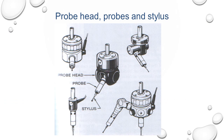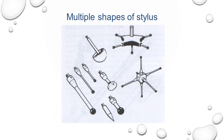Different types of probe assemblies are available — stylus, probe, and probe head. The probe can be tilted in any direction and depends upon the application. Suppose if you are measuring a bore or an outside perimeter, the probe head, probe and stylus can be changed accordingly. There are star-headed types, disc types, conical types, and rotary types. For measuring roundness, a star-headed probe is better.